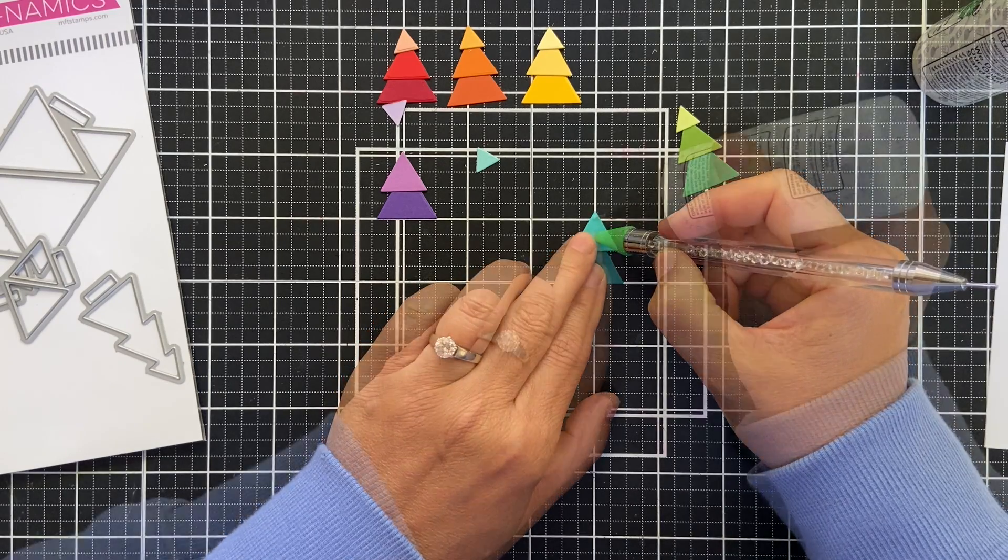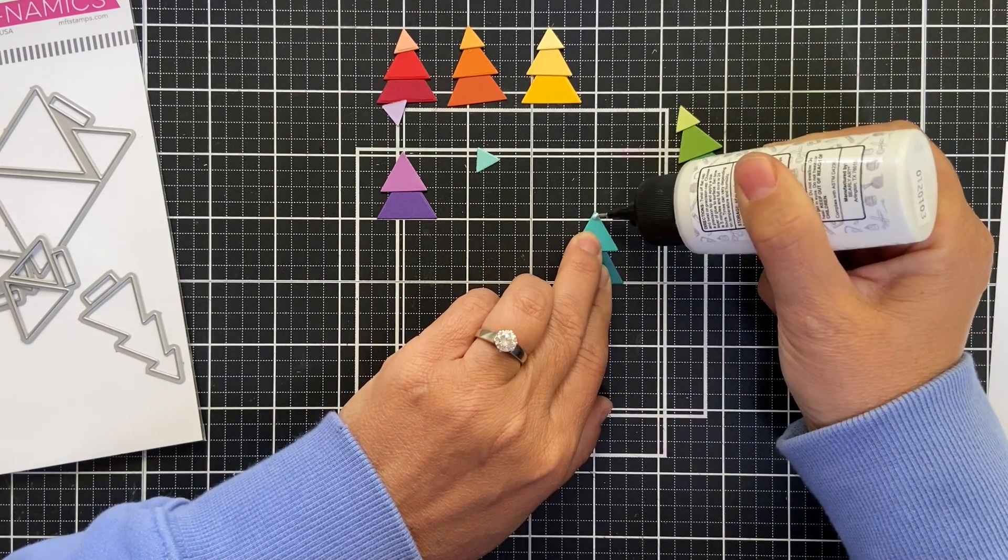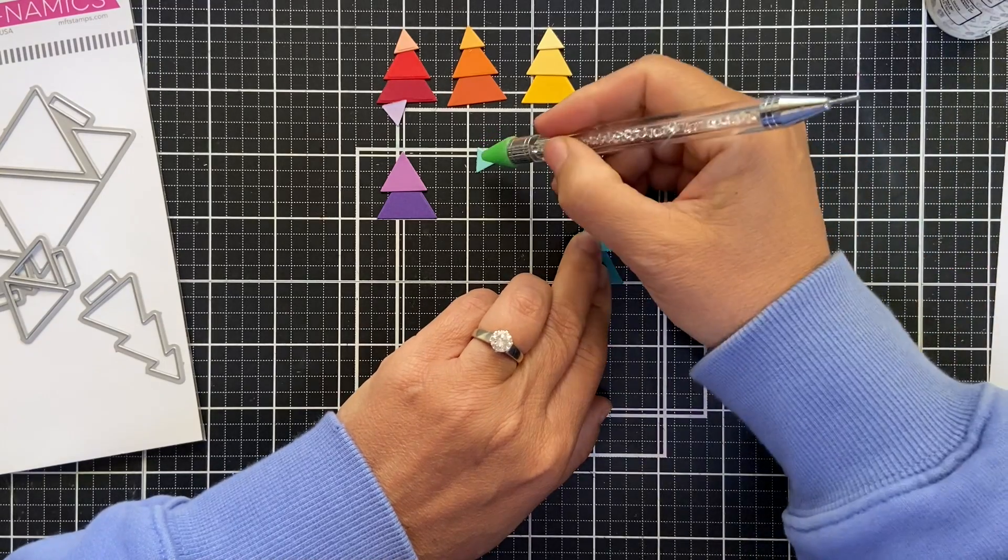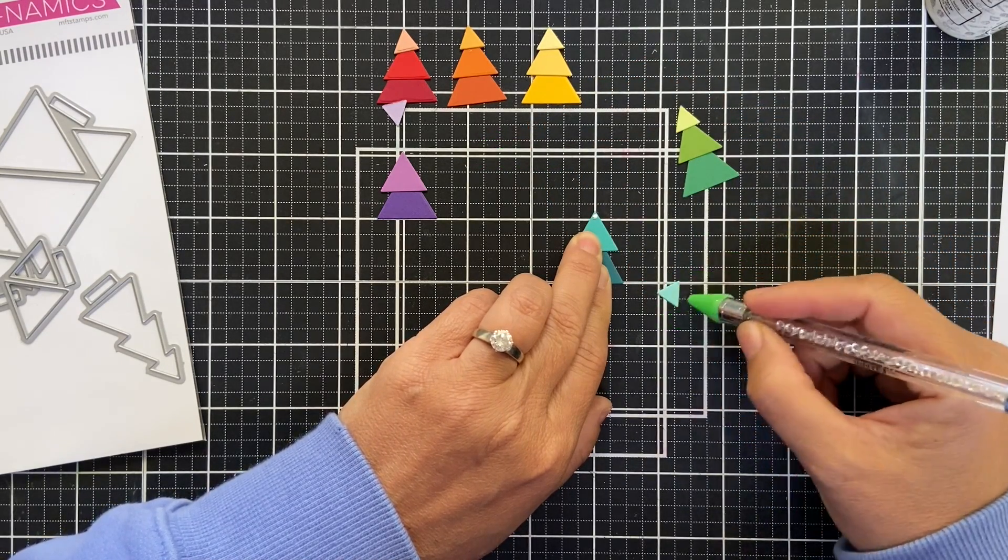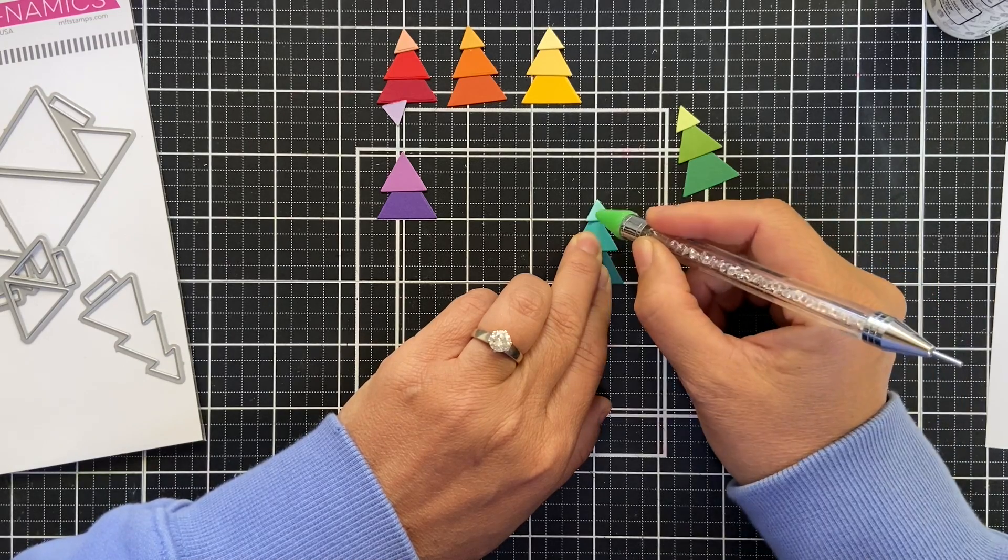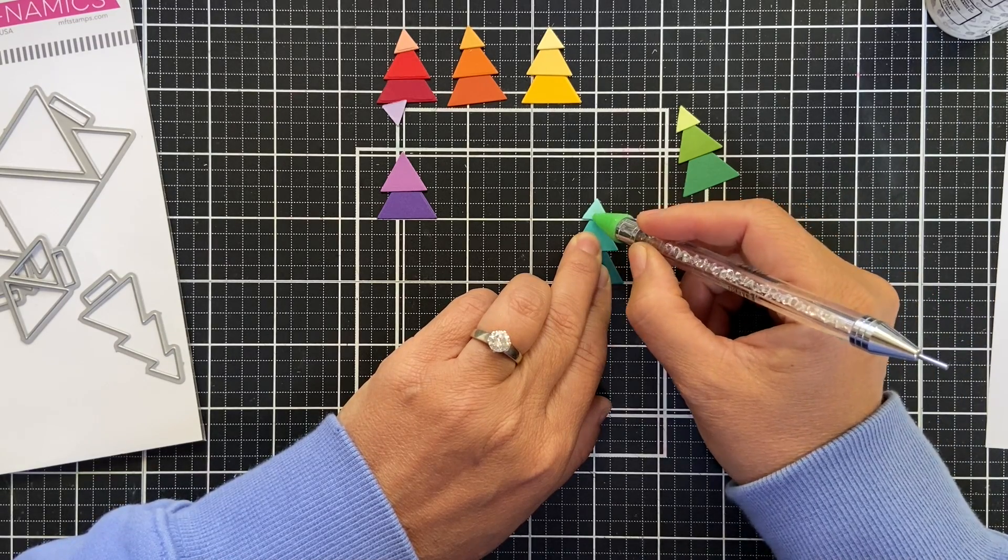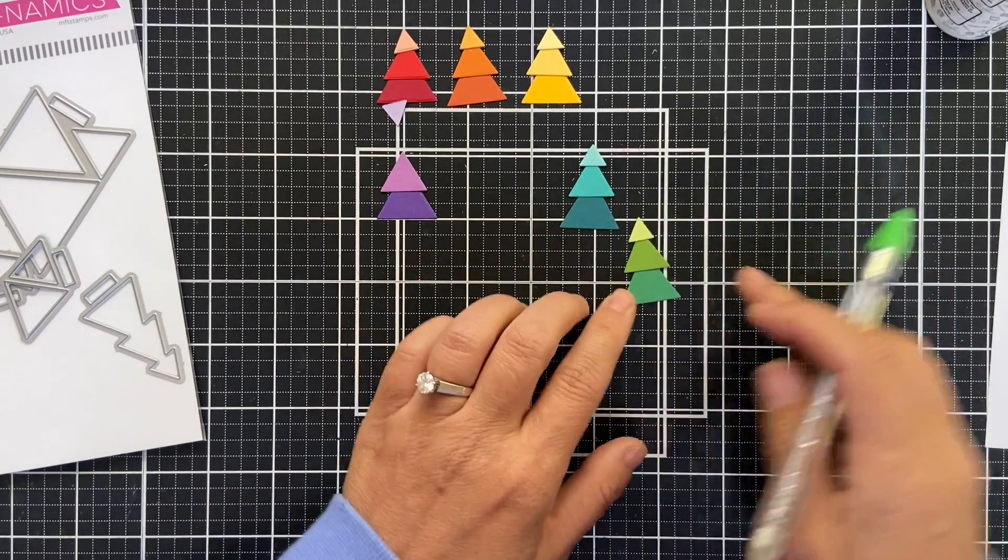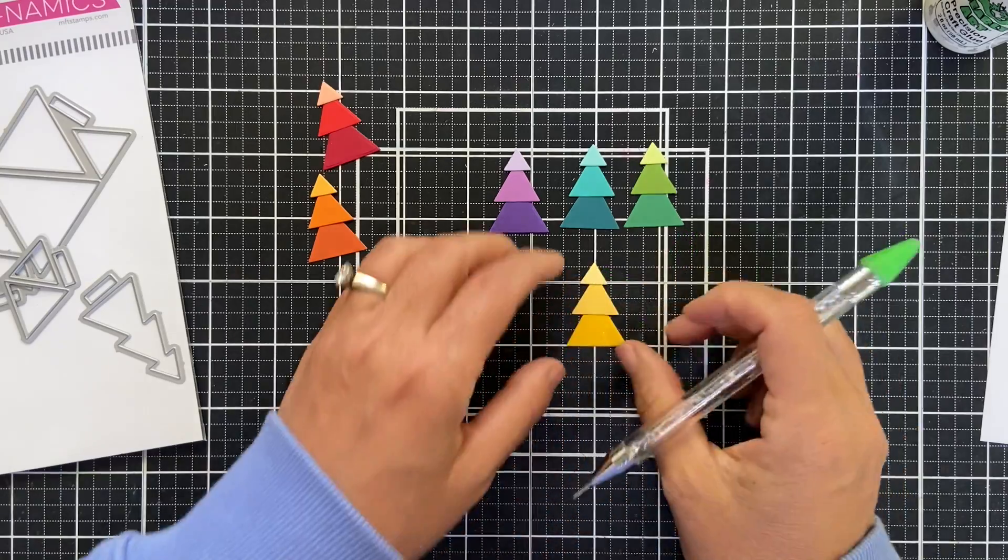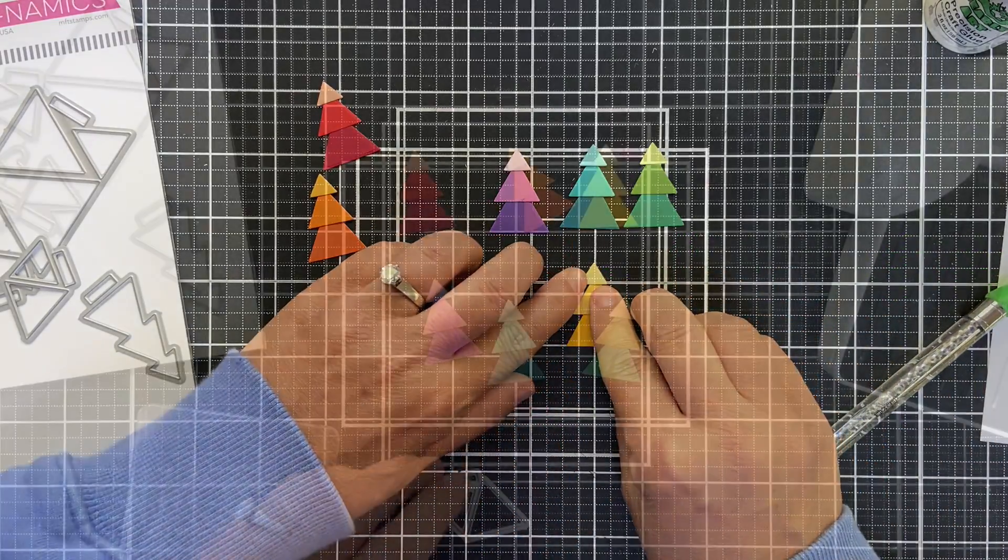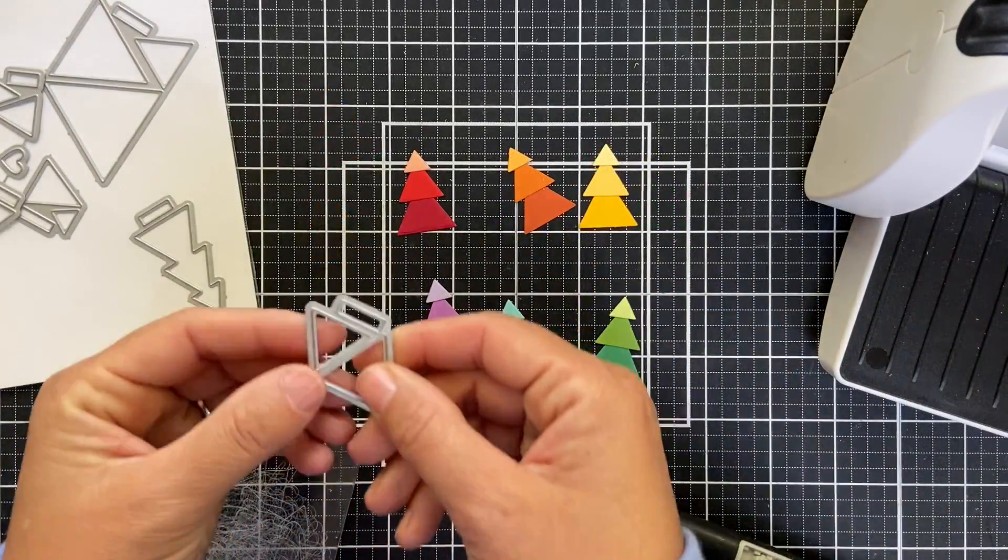I kept it flat because I knew I would end up popping it up onto my card base, so the triangle itself is just glued with liquid glue. That little grid mat came in really handy - it helped me to make all of my triangles consistent, same height. Because that's what we need during the holidays - we need to keep it simple, we need to keep it consistent.